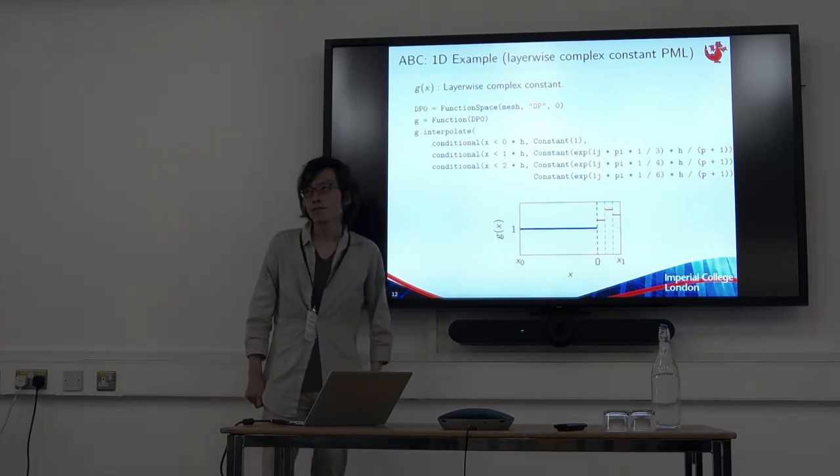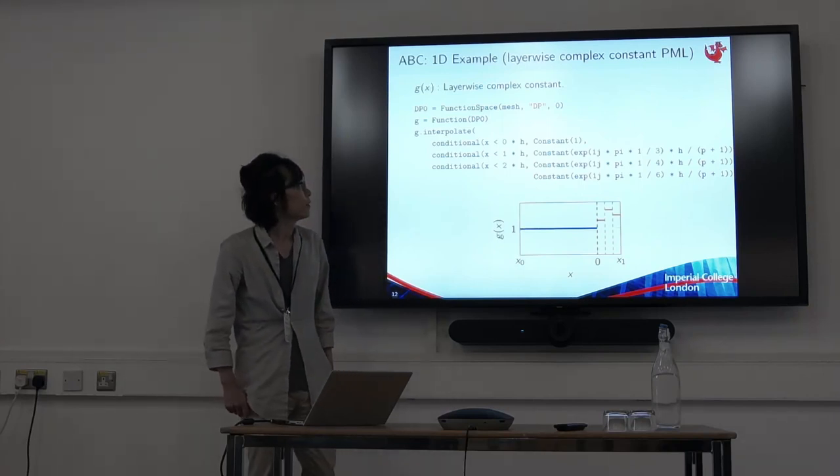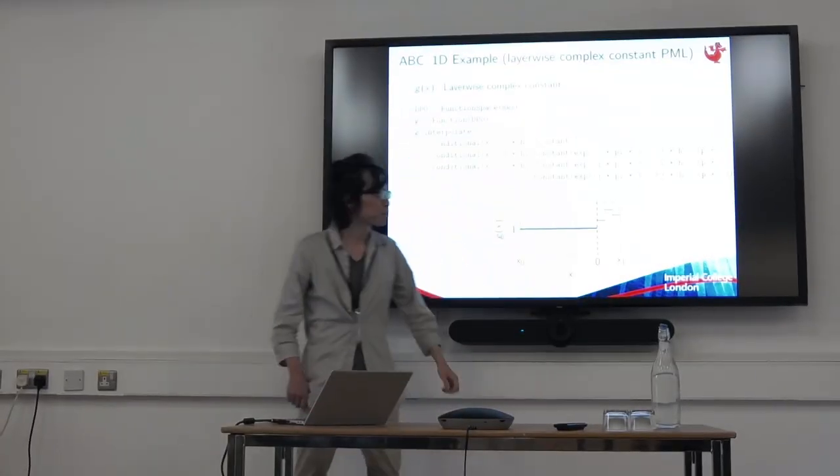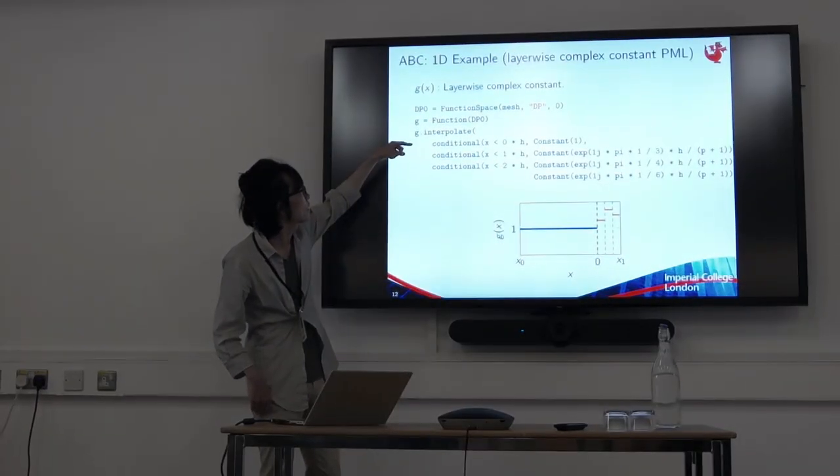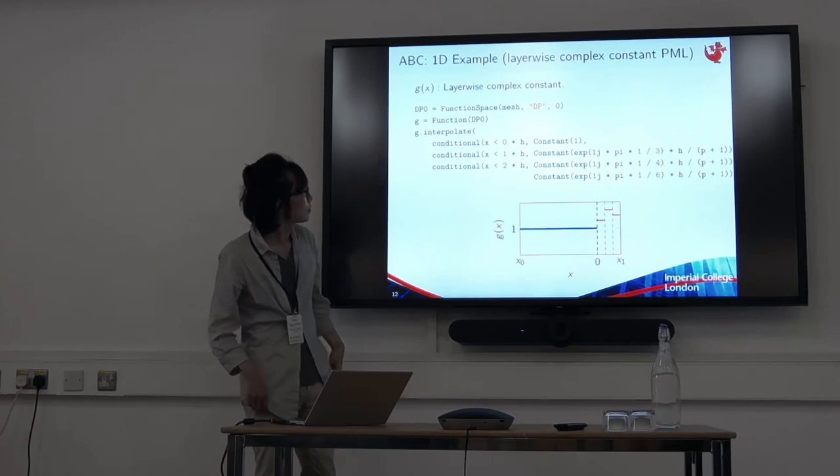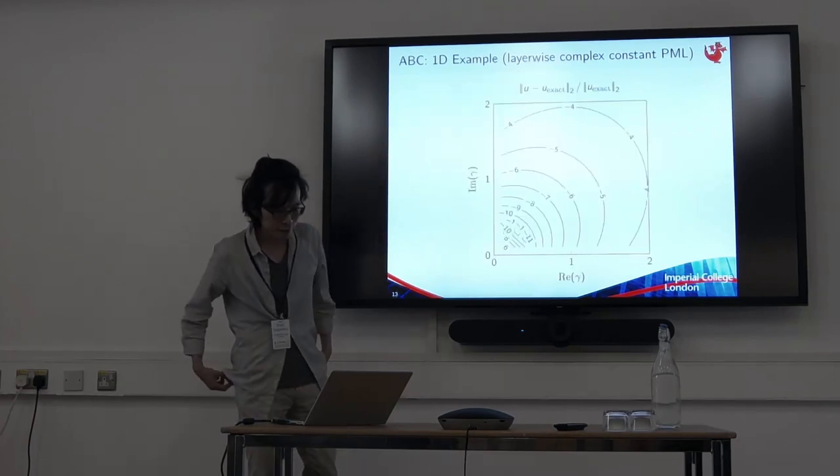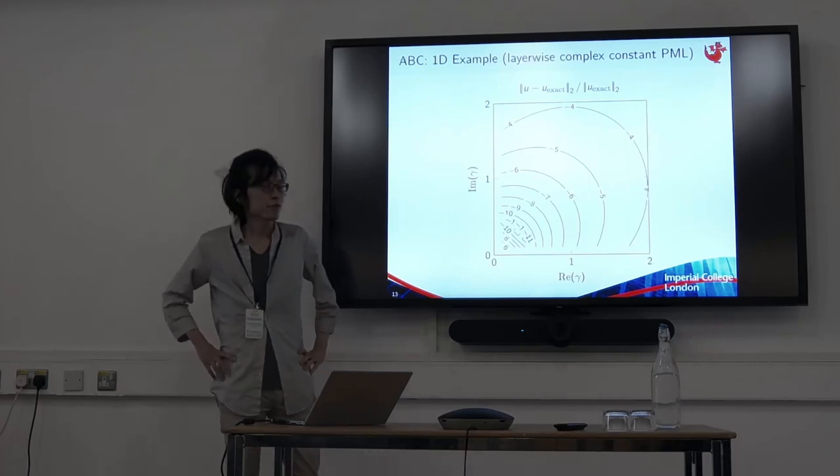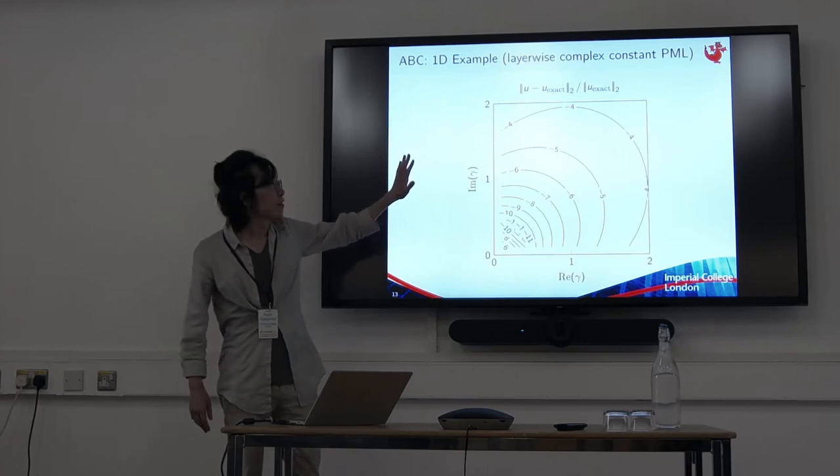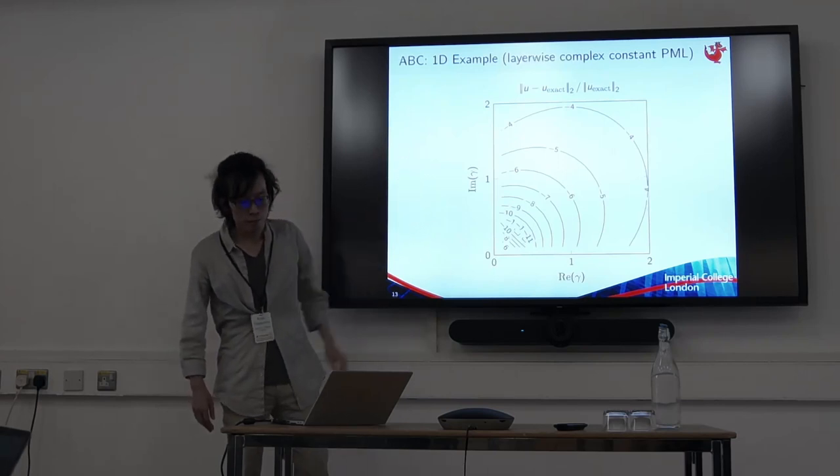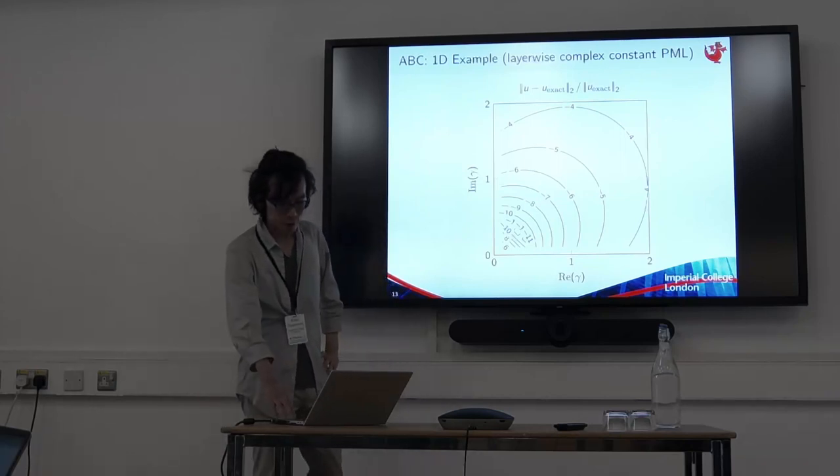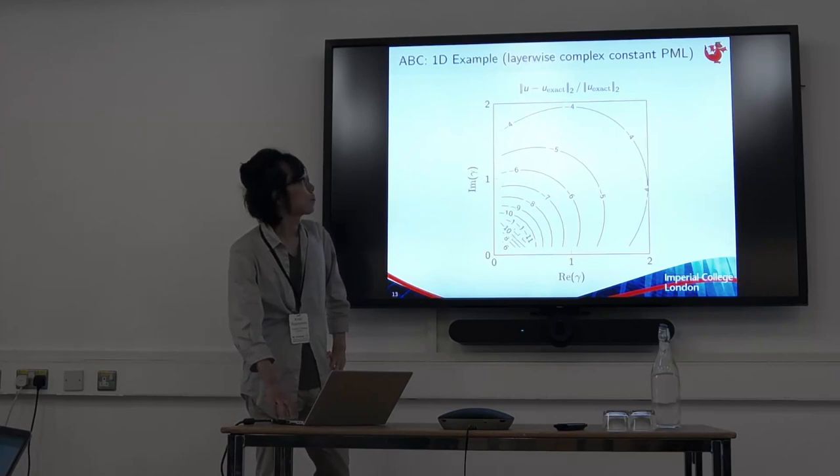We now construct a slightly different version of PMLs, the layer-wise constant PML. G of x is just layer-wise constant. We can do this in FireDrake by nesting conditionals. And this is the error we get. We are not expecting anything better than the regular PML. And usually, this layer-wise constant PML underperforms the standard PML. But the proposed absorbing boundary condition is based on this layer-wise constant PML.